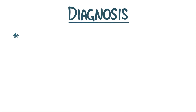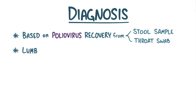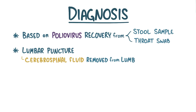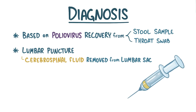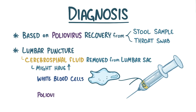Diagnosis of polio is based on the recovery of poliovirus from a stool sample or a throat swab. Poliomyelitis can also be diagnosed by a lumbar puncture where cerebrospinal fluid is removed from the lumbar sac with a needle. The cerebrospinal fluid might have an increased number of white blood cells or poliovirus RNA.